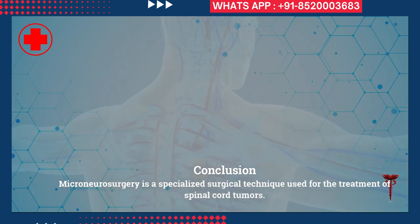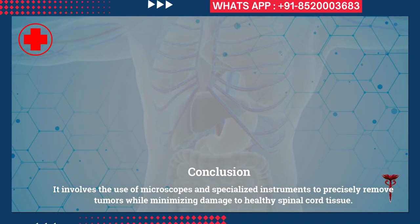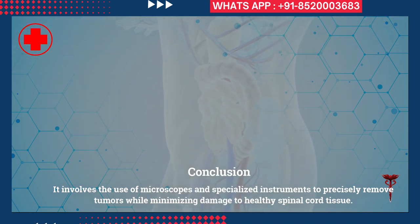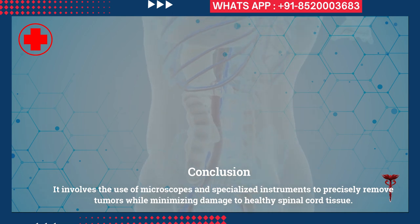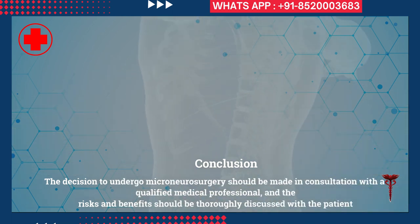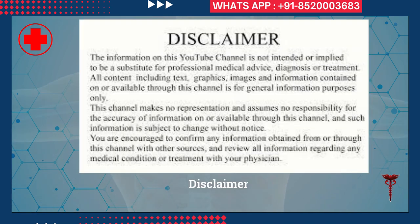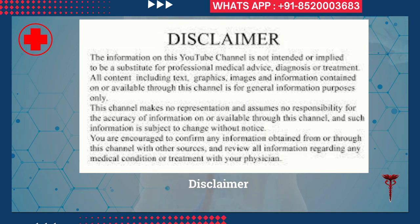Conclusion: micro neurosurgery is a specialized surgical technique used for the treatment of spinal cord tumors. It involves the use of microscopes and specialized instruments to precisely remove tumors while minimizing damage to healthy spinal cord tissue. The decision to undergo micro neurosurgery should be made in consultation with a qualified medical professional, and the risks and benefits should be thoroughly discussed with the patient.